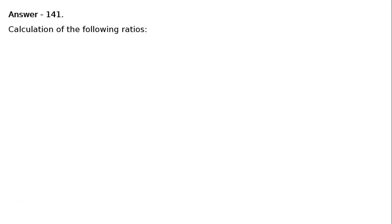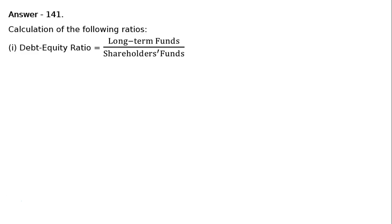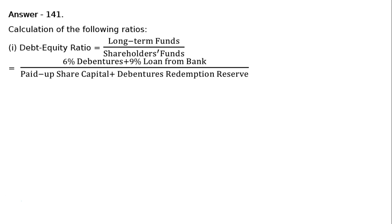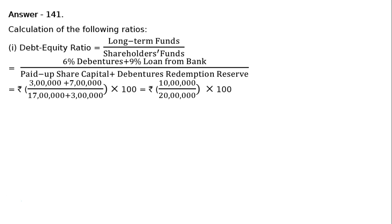Answer 141. Calculation of the following ratios. 1. Debt to Equity Ratio is equal to Long Term Funds upon Shareholders Funds. That is equal to 6% debentures plus 9% loan from bank, whole divided by paid up share capital plus debentures redemption reserve. That is equal to Rs. 3 lakhs plus Rs. 7 lakhs, whole divided by Rs. 17 lakhs plus Rs. 3 lakhs, whole into 100.